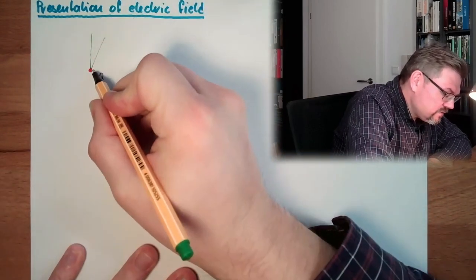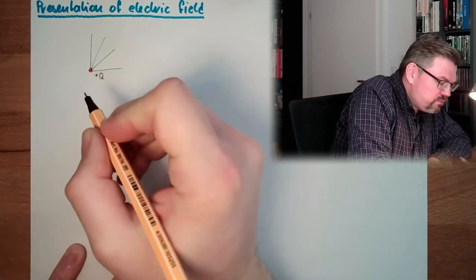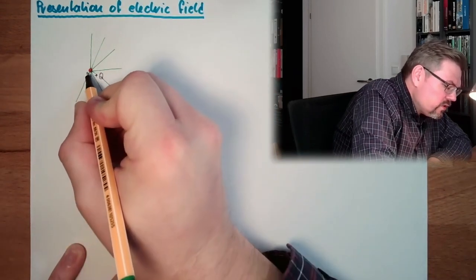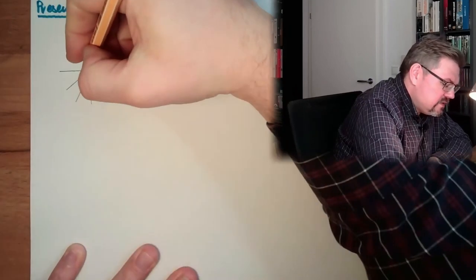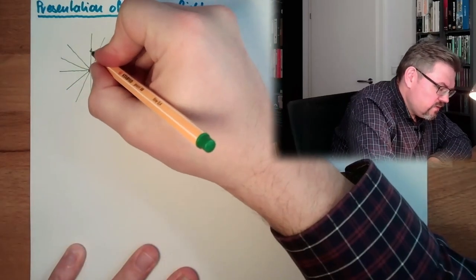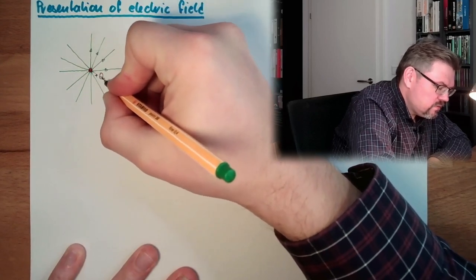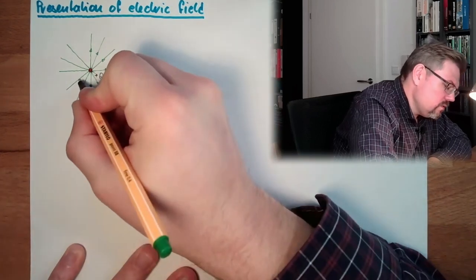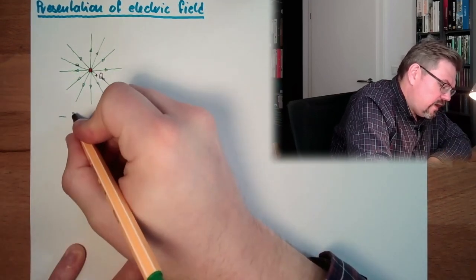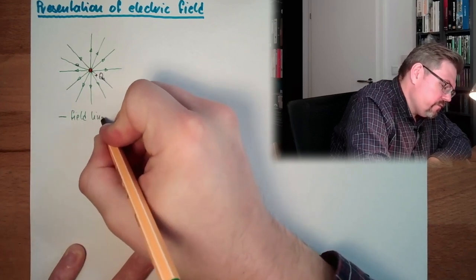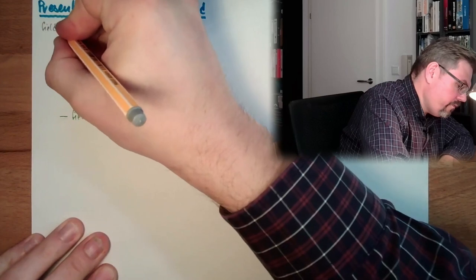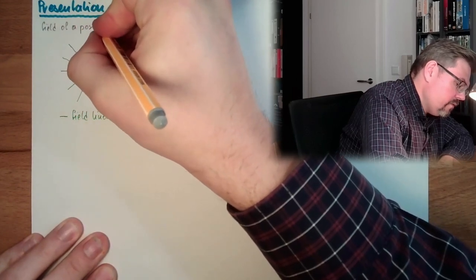Starting and coming out of this point — we do not call them rays, we call them field lines. These are the field lines, and to know in which direction, we draw little arrows. These things here are the so-called field lines, and we're talking about the field of a positive charge.